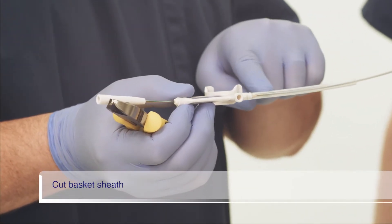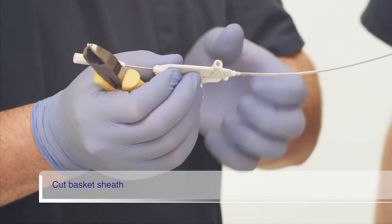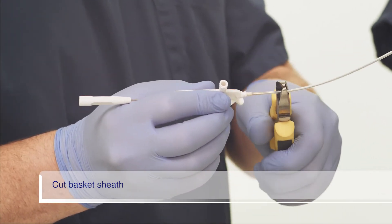To accomplish this, slide the plastic sleeve located at the handle away from the handle. Then, using the wire cutters, cut the sheath close to the handle.